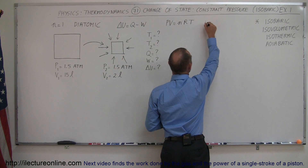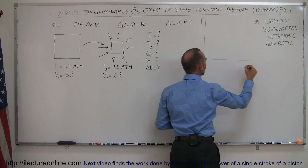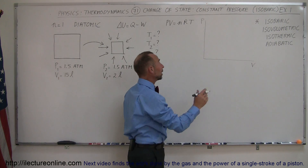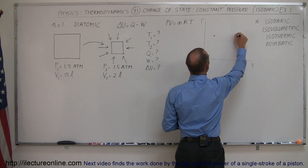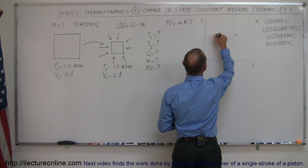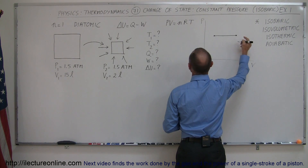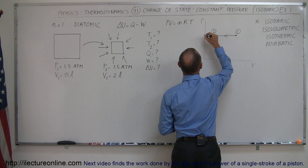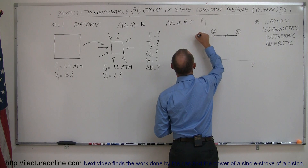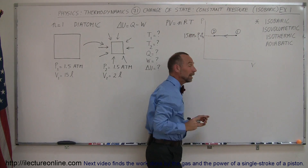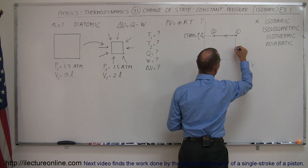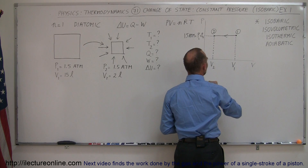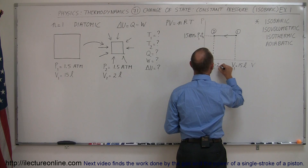I like to start by drawing a PV diagram, with pressure on the vertical axis and volume on the horizontal axis. Since it's an isobaric process, the pressure doesn't change, so we have an initial point and a final point at the same pressure. The volume decreases, so we travel from right to left. The initial state is P1 = P2 = 1.5 atmospheres, with V1 = 15 liters and V2 = 2 liters.